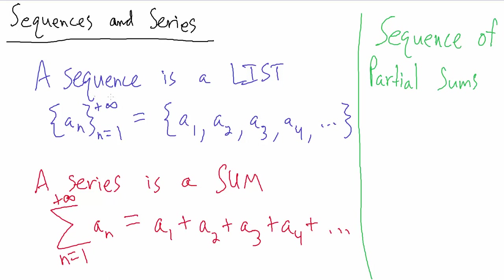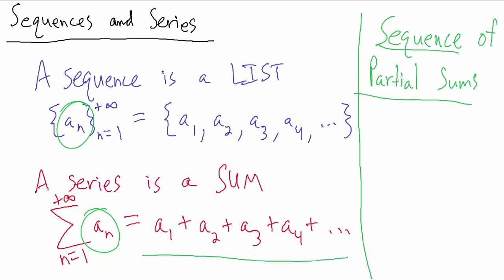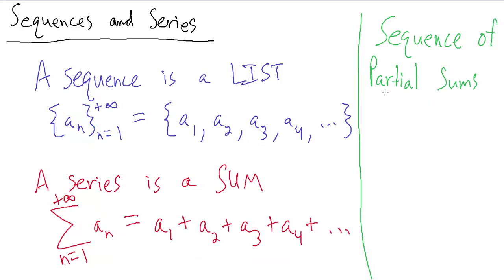In the last video we talked about sequences and series — specifically the differences between them. A sequence is a list of terms, while a series is a sum. We mentioned that series have two sequences associated with them: the sequence a_n that lists all the terms being added, and the sequence of partial sums. In this video we're going to talk about the sequence of partial sums.